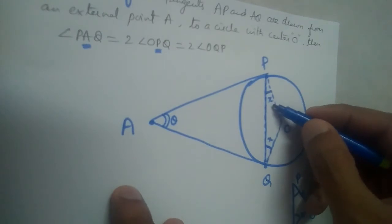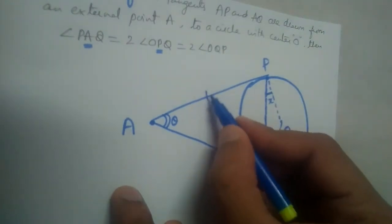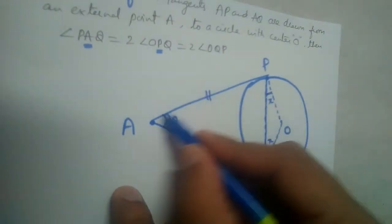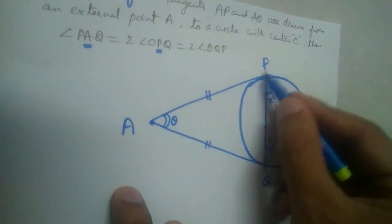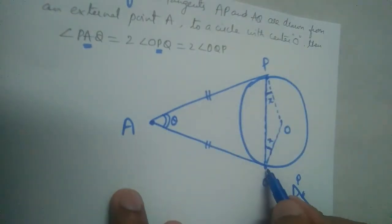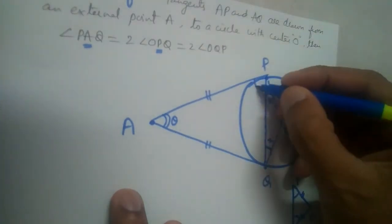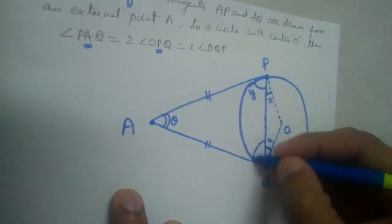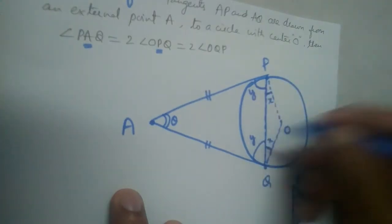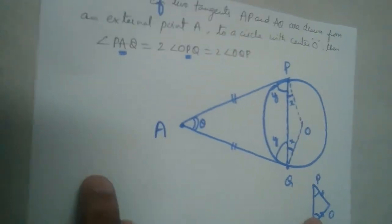We have also learned in one of the theorems that the lengths of tangents drawn from an external point are equal, so AP equals AQ. That means their opposite angles in triangle APQ will also be equal. Let us take each of these base angles as y, so both will be y.